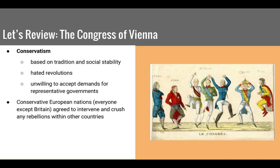Conservatism is based on tradition and social stability. These nations hated the idea of revolutions and really didn't like representative governments that gave lower classes more say. The major conservative nations — Prussia, Austria, and especially Russia — agreed to intervene and crush any rebellions they saw in other countries in order to keep this old way of governing intact. Britain was not considered as conservative.